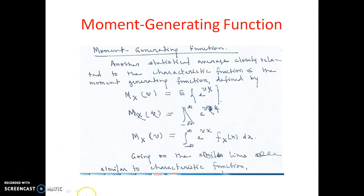phi_x(omega) always exists. Hence, if the derivative of phi_x(omega) exists, the moments can always be found. It can be shown that the magnitude of phi_x(omega) is less than or equal to phi_x(0), which equals 1. So the maximum value of phi_x(omega) is equal to 1.